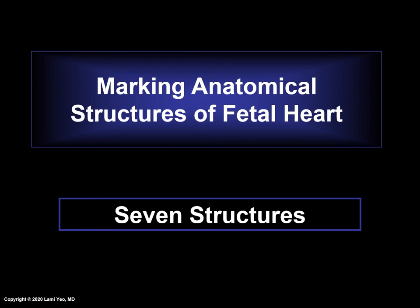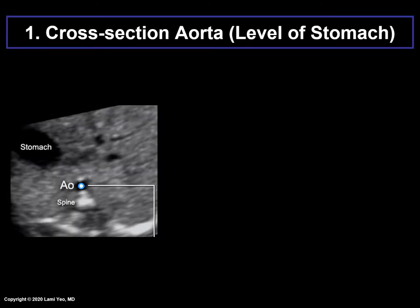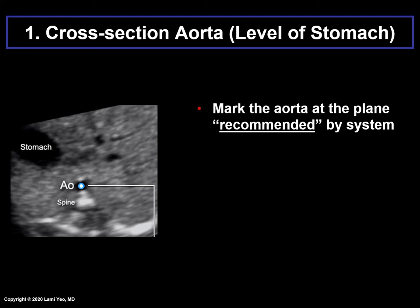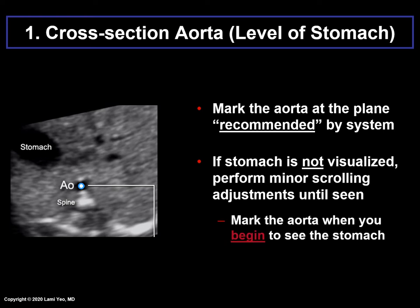Now we will review in detail how to mark the seven anatomical structures. The first structure to be marked is the cross section of the aorta at the level of the stomach. The spine will automatically show the plane at the level of the stomach, where the cross section of the aorta will be visible. One should mark the aorta at this plane. However, if the stomach is not visualized, perform minor scrolling adjustments until the stomach is seen. Mark the aorta when you begin to see the stomach.